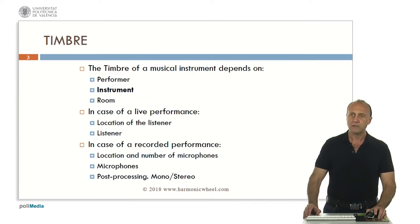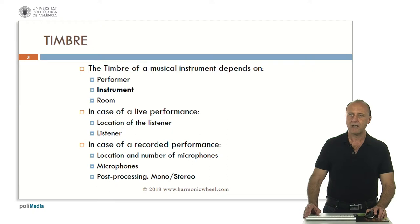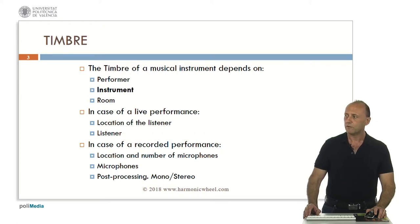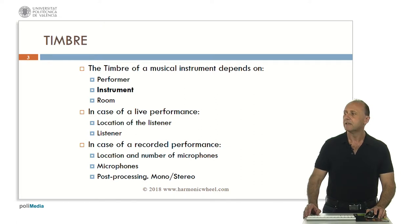The timbre of a musical instrument depends on, on the one hand, the performer, the instrument itself, and the acoustic room. And on the other hand, in case of a live performance, on the location of the listener and the listener himself or herself. And in case of a recorded performance, on the location and number of microphones and the kind of microphones. And of course on the post-processing — the result can be mono or stereo.